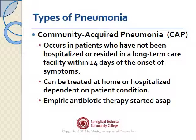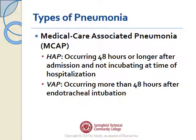Community acquired pneumonia occurs in patients who have not been hospitalized or resided in a long-term care facility within 14 days of the onset of symptoms. It can be treated at home or the patient can be hospitalized depending on their condition. The trick with pneumonia is to make sure that empiric antibiotic therapy is started as soon as possible — meaning we give antibiotics without a culture or confirmed organism because we need to treat.